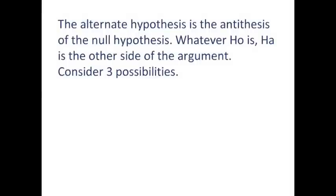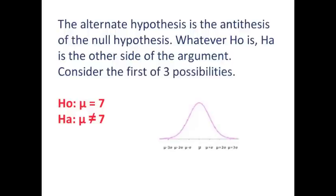The alternate hypothesis is the antithesis of the null hypothesis. Whatever H0 is, HA is the other side of the argument. Now we are going to consider the first of three possibilities. The null hypothesis might be a claim, for instance, that mu equals 7. The alternate hypothesis is the claim that mu is not 7.